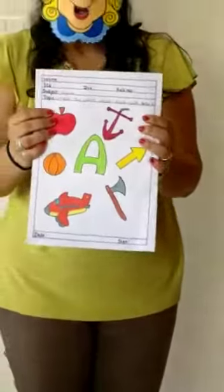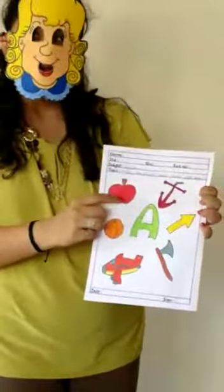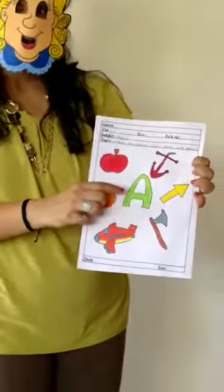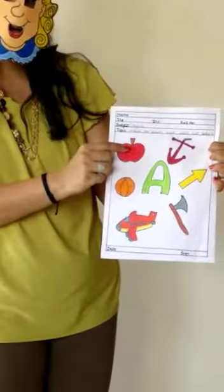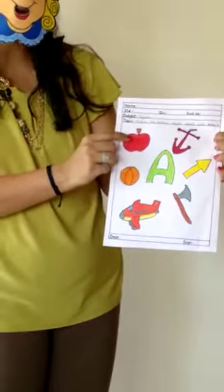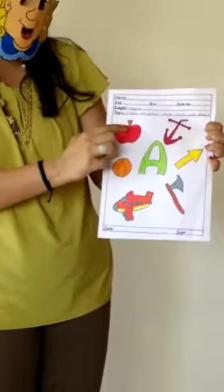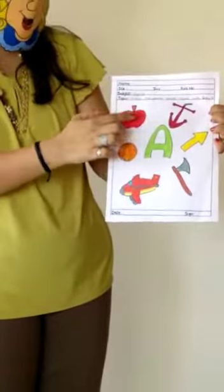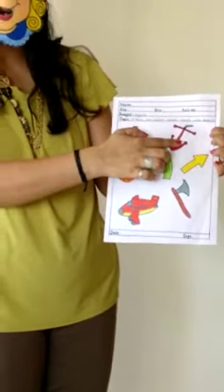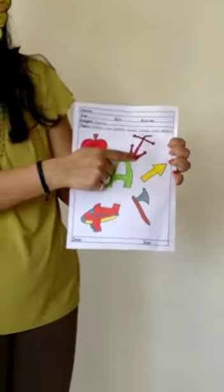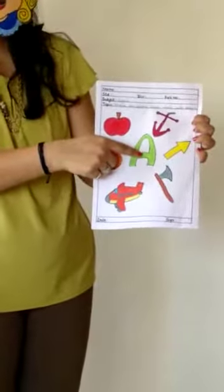And in the second worksheet, you have to match the A friend with the letter A. This is an apple. So it starts with letter A. So you have to match it with A. This is an anchor. It starts with letter A. So you have to match it with letter A.